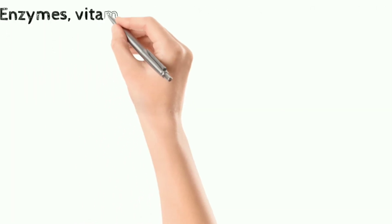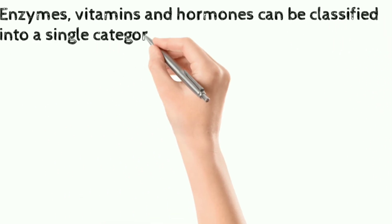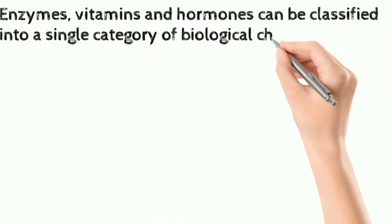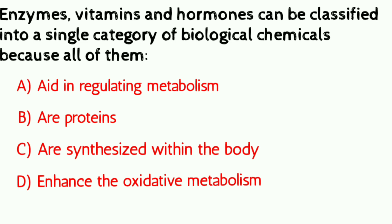Question number six: enzymes, vitamins, and hormones can be classified into a single category of biological chemicals because all of them — a) aid in regulating metabolism, b) are proteins, c) are synthesized within the body, d) enhance oxidative metabolism. Correct answer is: aid in regulating metabolism.